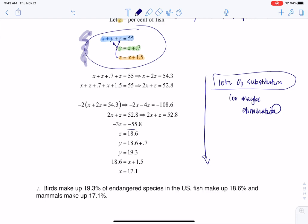So after I do all of my substitution there's z, there's y, and there is x so we can see the different percentages that the birds, mammals, and fish make up. All right thanks so much everyone. Bye.